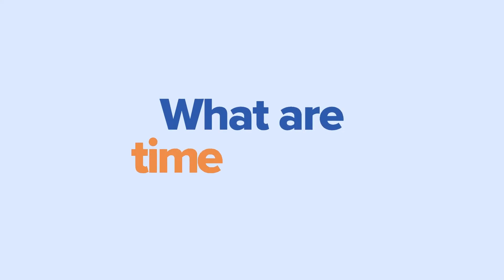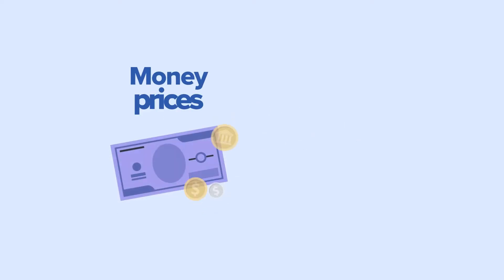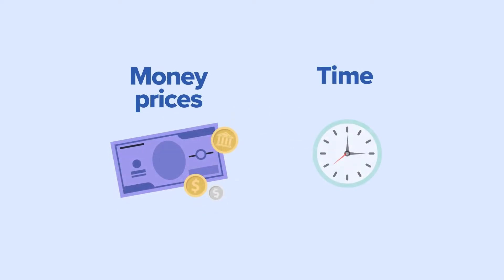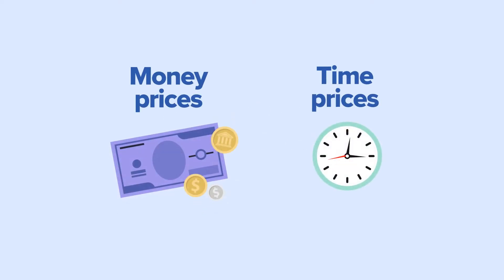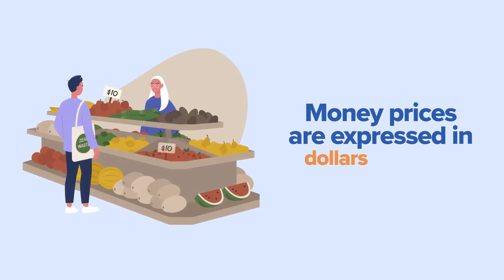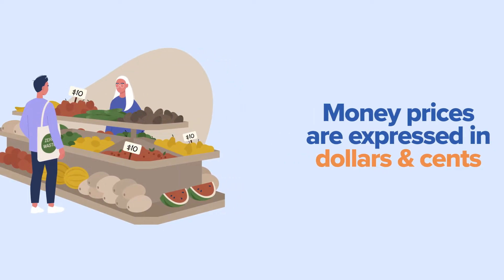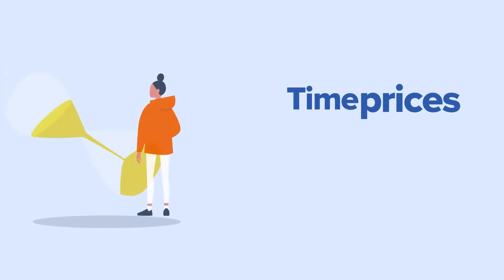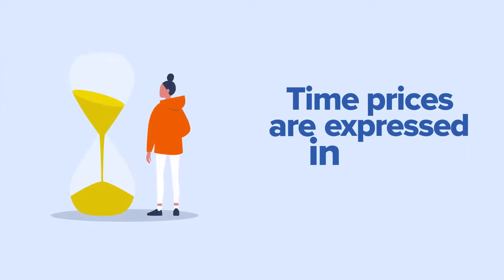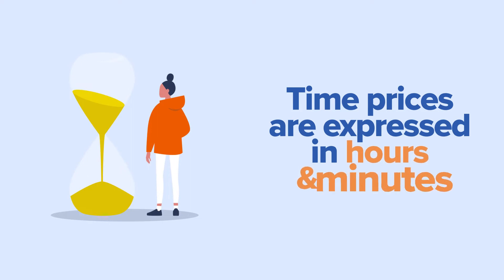In this video, we will explain time prices. There are two kinds of prices: money prices and time prices. Money prices are expressed in dollars and cents. Time prices are expressed in hours and minutes.